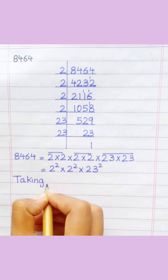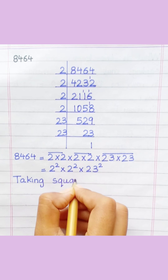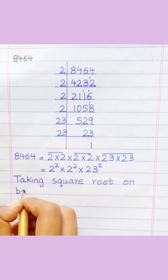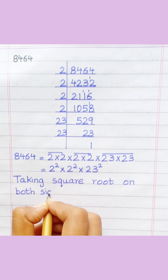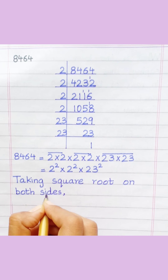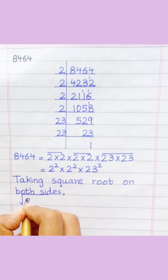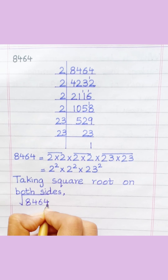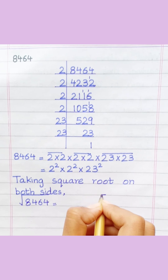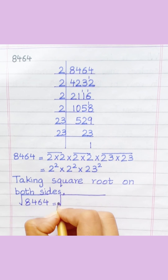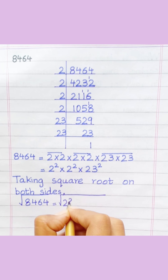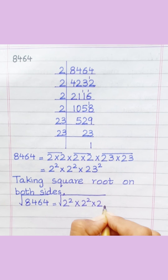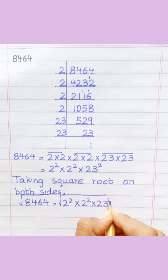Taking square root on both sides. Square root of eight thousand four hundred sixty-four equals square root of two squared multiply two squared multiply twenty-three squared.